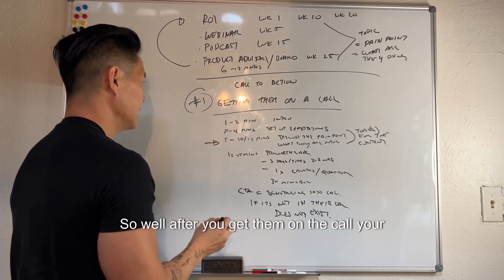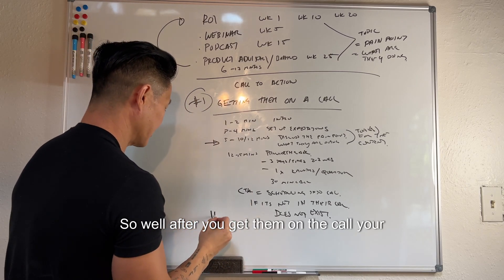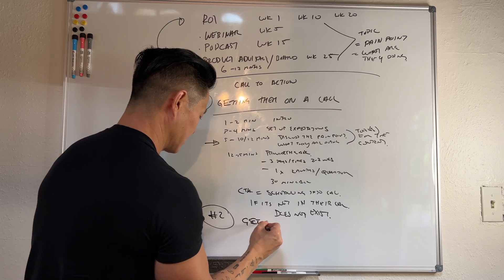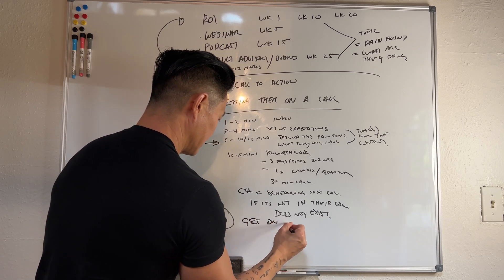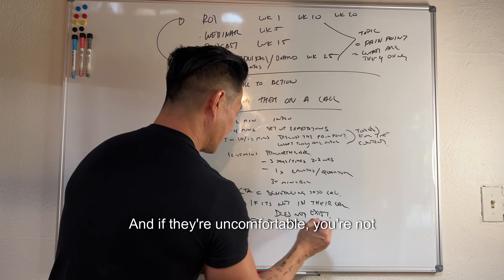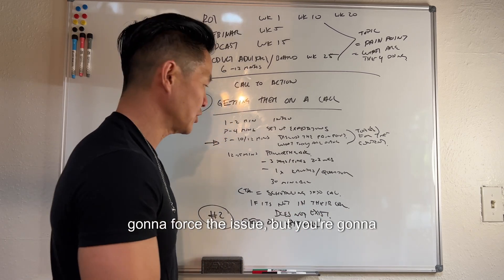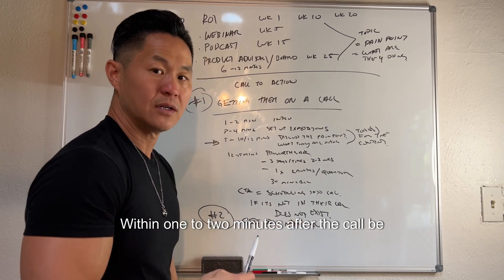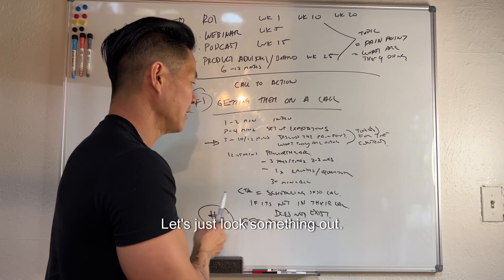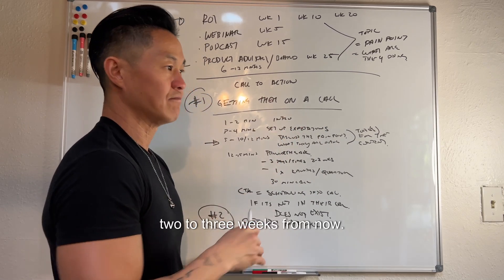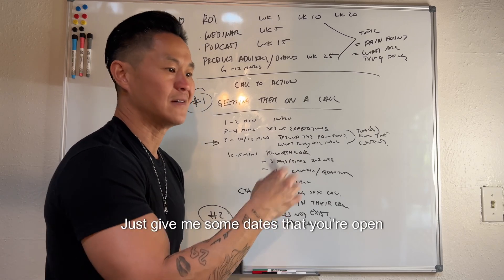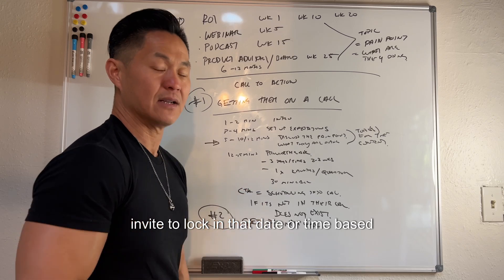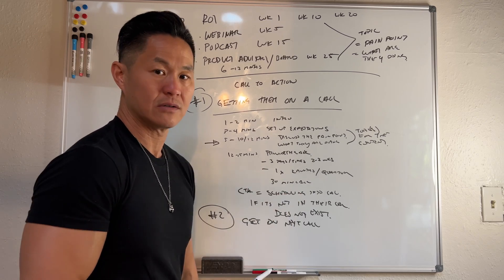So after you get them on the call, your immediate goal is to get them on another call - that's your number one goal. If they're uncomfortable, you won't force it, but immediately follow up within one to two minutes after the call: 'Hey, great talking to you - let me know what your schedule looks like two to three weeks from now, just give me some dates you're open.' Then send a calendar invite based on what they've suggested.